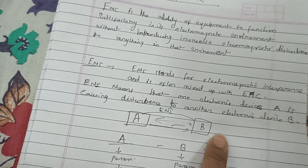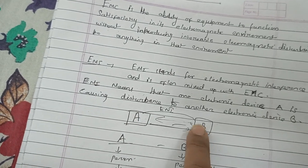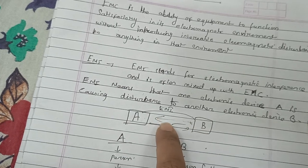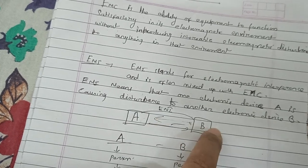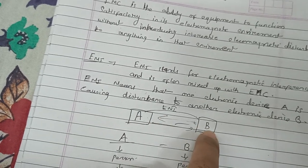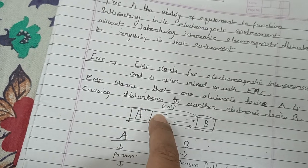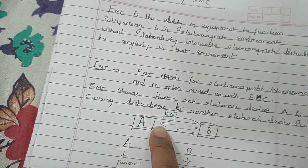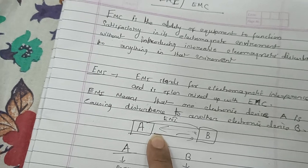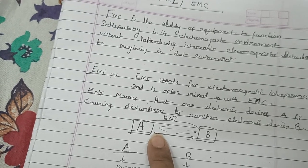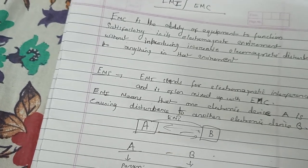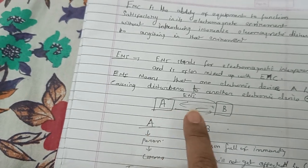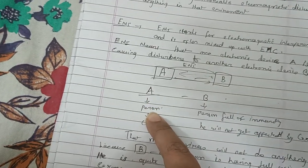So suppose this is device A and this is device B. Some electromagnetic interference is coming from B — B is sending something to A, and because of that A is not functioning properly.